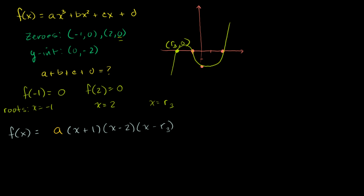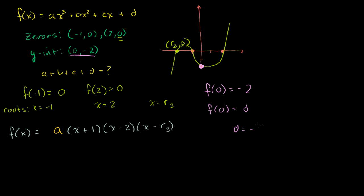The other big clue is the y-intercept — the point (0, -2) tells us f(0) = -2. What is f(0)? If you put 0 in the polynomial ax³ + bx² + cx + d, all the x terms become 0 and you're just left with d. So f(0) = d, which means d must equal -2. We've solved at least one of the coefficients — the constant term d = -2.